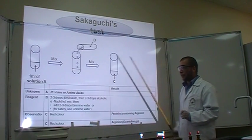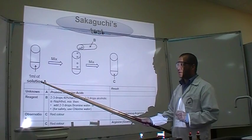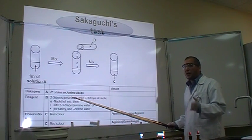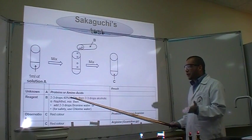How do you perform the experiment? Simply, if you have 1 ml of solution A, which could be proteins or any amino acids that contains Arginine, what should we do?